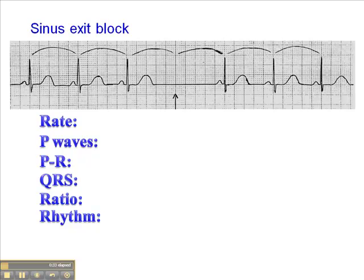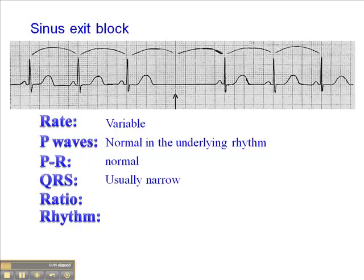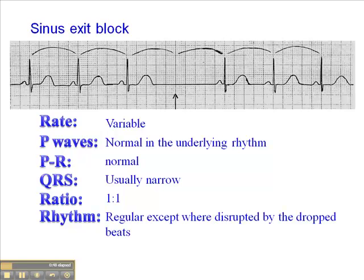Sinus exit block is fairly rare. The rate in sinus exit block may vary. Typically, the underlying heart rate is normal, and P waves are normal in the underlying rhythm. The PR interval will be normal, QRS is narrow, and the ratio is one to one. The rhythm is regular except where disrupted by the dropped P wave. The underlying rhythm is sinus — we see a P wave and a QRS, and then we see this pause, much like the pause we saw in sinus arrest or sinus pause.